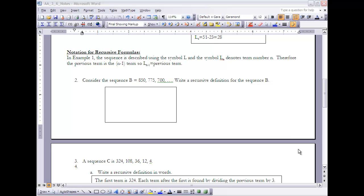As we look at recursive formulas, we actually use a little different notation than just saying 'previous term.' In Example 1, the sequence is described by using L, and the symbol L sub n denotes the term number n. Well, if that's the case, then the previous term has to be n minus 1. So if I wanted to write 'previous term' instead of writing out that whole thing, we could write L sub n minus 1.